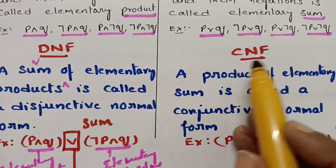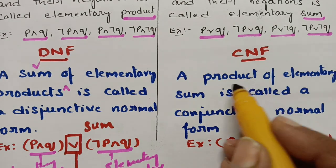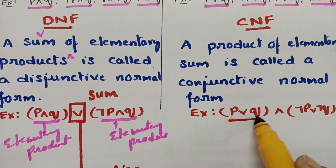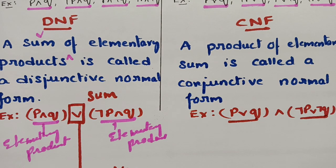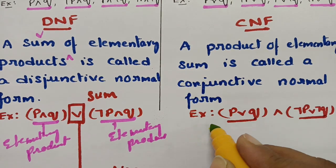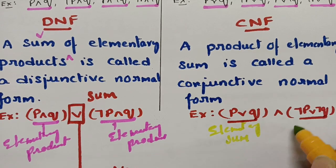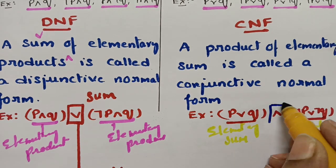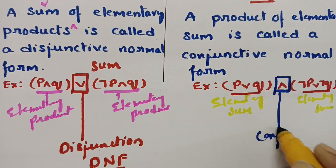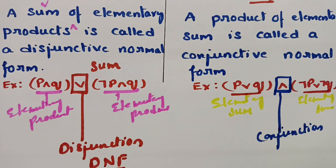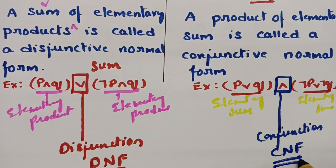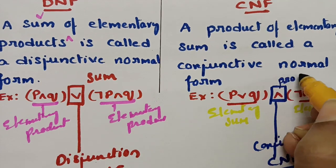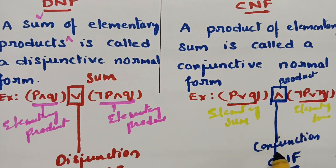CNF stands for conjunctive normal form. The product of elementary sums is called a conjunctive normal form. So here the individual groups are elementary sums, each represented by the disjunction (∨/cup) symbol, and in between these elementary sums there is a conjunction symbol (∧/cap). It is very easy to understand: look at what symbol appears between the bracketed groups — if it is conjunction, it is CNF.